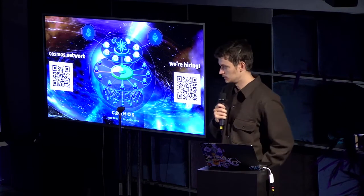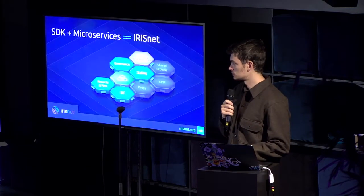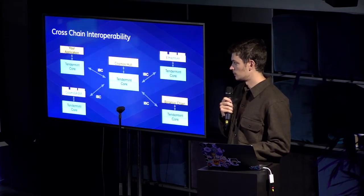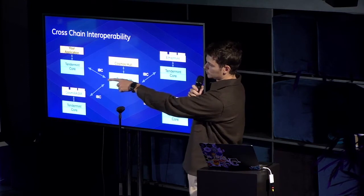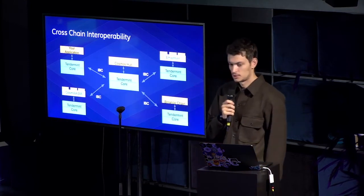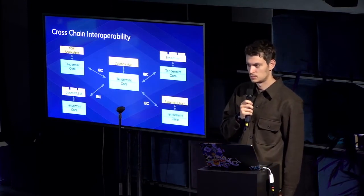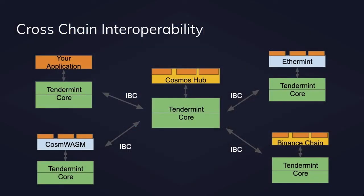Currently, on this slide, there's Cosmwasm, which will be Rust-based smart contracts. The work started back at the Berlin Hackathon and it's picking up again — I believe it picked up last week. Knowing the developer behind it, I can see Cosmwasm launching as a module in the Cosmos SDK within the next two to three weeks.